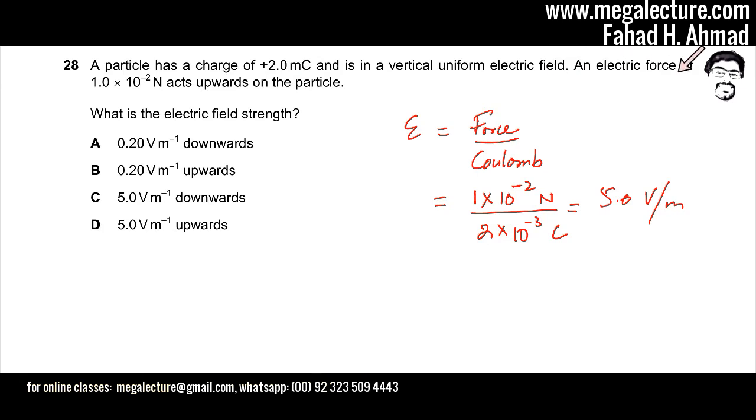The electric force is acting upwards on the positive charge, so that is the direction of the electric field. Therefore, the answer is 5 volts per meter upwards.